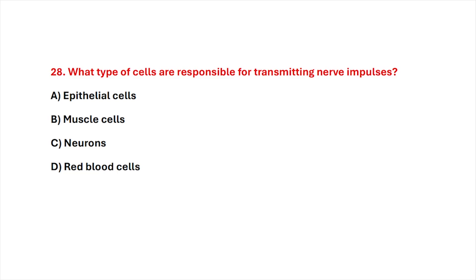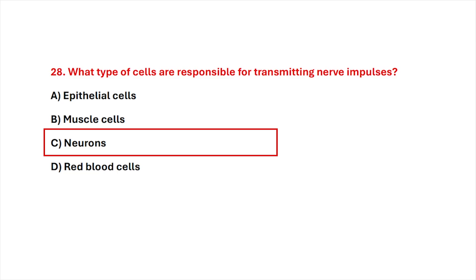Question 28. What type of cells are responsible for transmitting nerve impulses? Correct answer is option C, neurons.